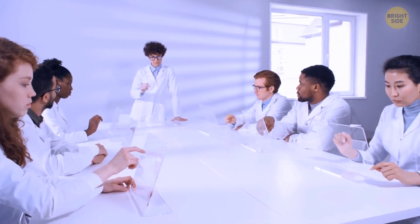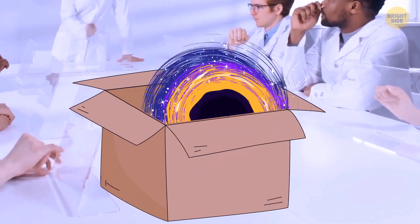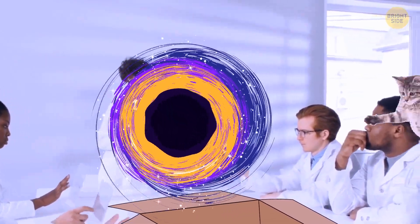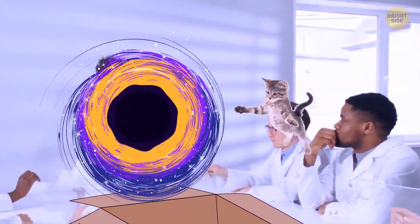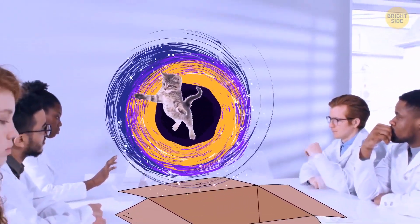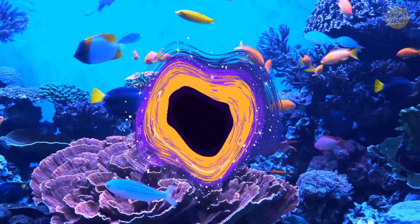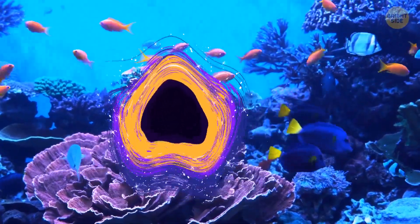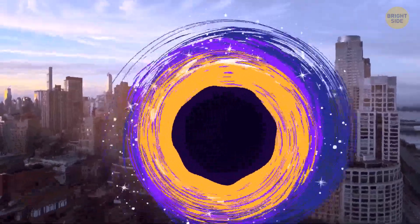Here's something cool that scientists have discovered recently: Schrödinger's black holes. Yep, the scariest objects in our universe turned out to be even more terrifying. Now we know that they can also exist in many states at once. But what does it mean? Let's find out.